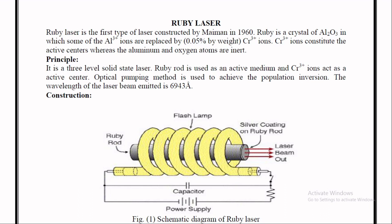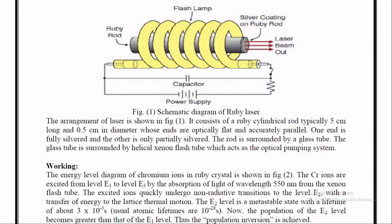Let us look at the construction of ruby laser. The arrangement consists of a ruby cylindrical rod typically 5 centimeters long and 0.5 centimeters in diameter whose ends are optically flat and accurately parallel. One end is fully silvered and the other end is partially silvered. The rod is surrounded by a glass tube which is surrounded by a helical xenon flash tube which acts as the optical pumping system.